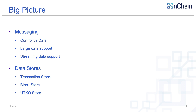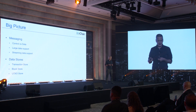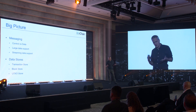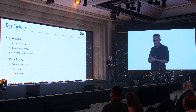Before we start building this system, we need to define the underlying components we'll be using, such as the messaging queue. We talk about control versus data messages — data messages can get large, they're designed to take full transactions, with large data and streaming data support. When you start to receive a block, you don't want to wait to receive the whole thing; you want to start processing it immediately. There are also data stores — a peer store, a transaction store. I don't really talk about mempool anymore; I talk about the set of unconfirmed transactions, which can be really large and does not necessarily fit in RAM.